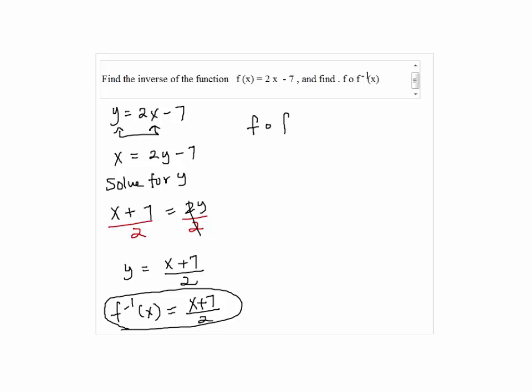Now, to find f composite of f inverse, we're going to substitute the inverse into 2x minus 7.